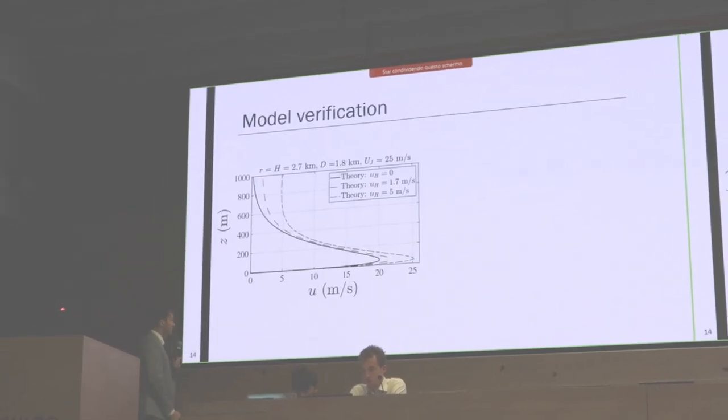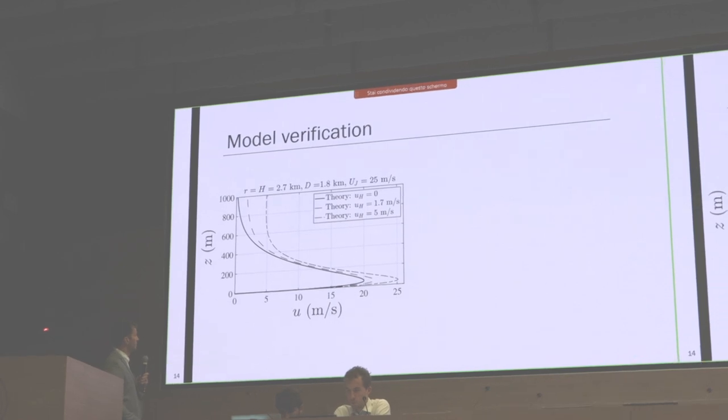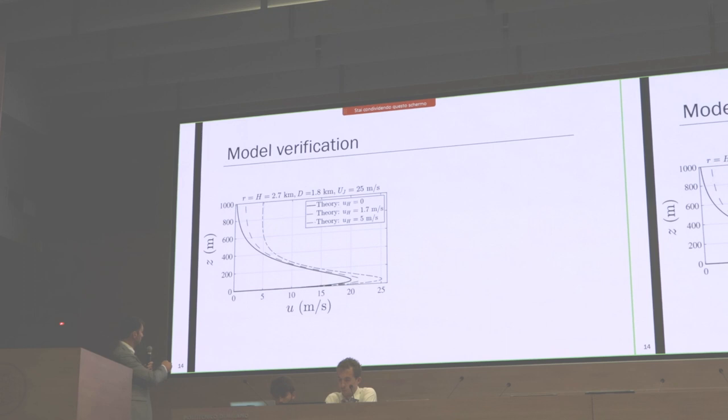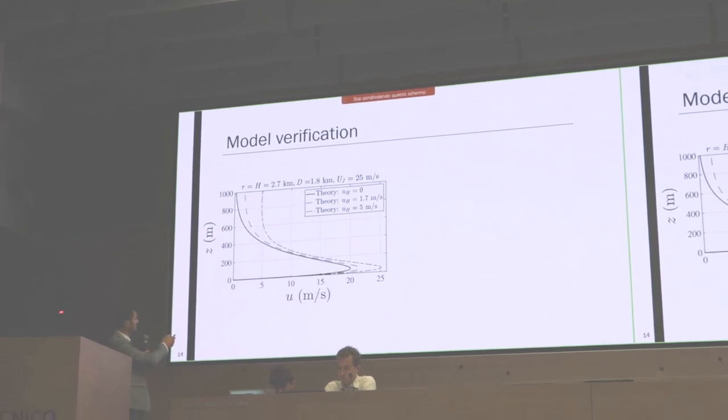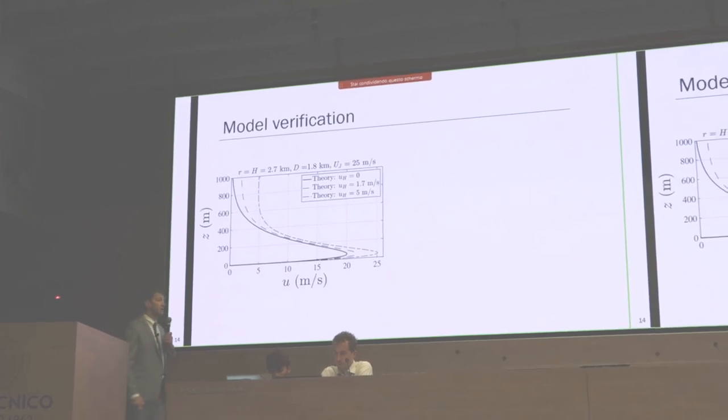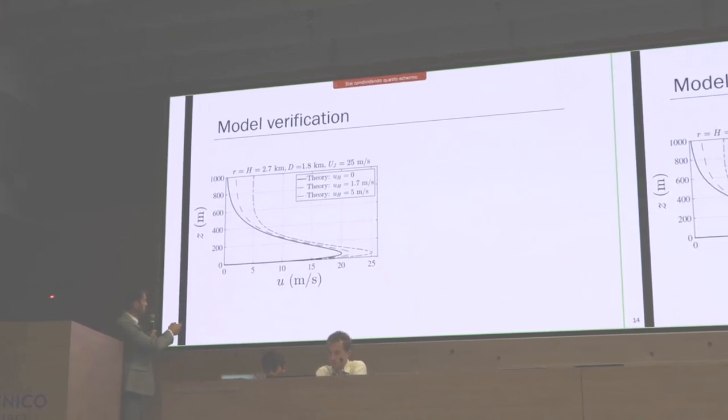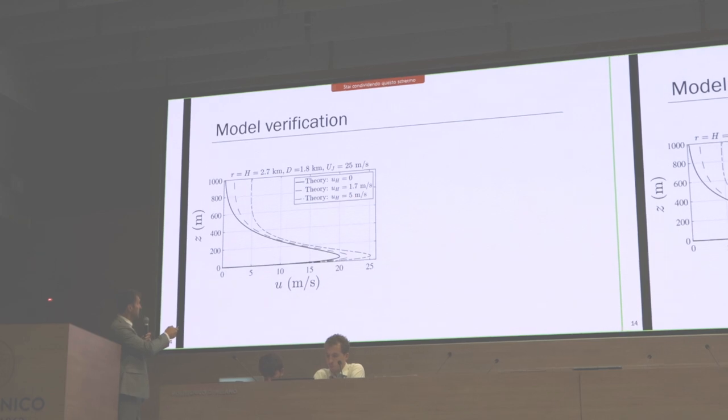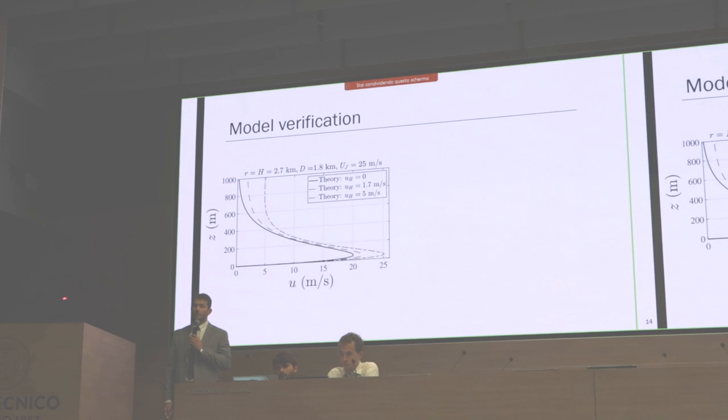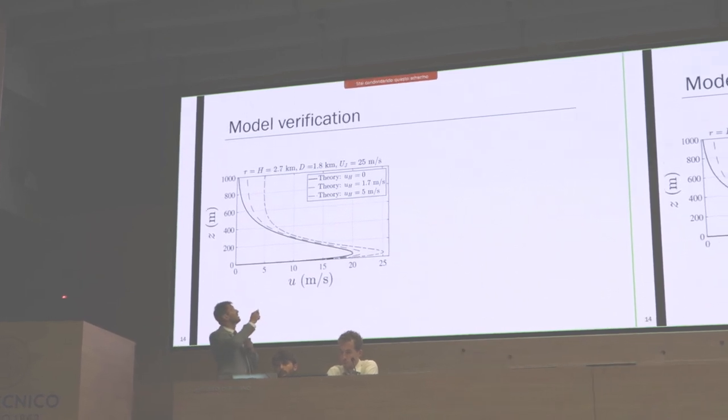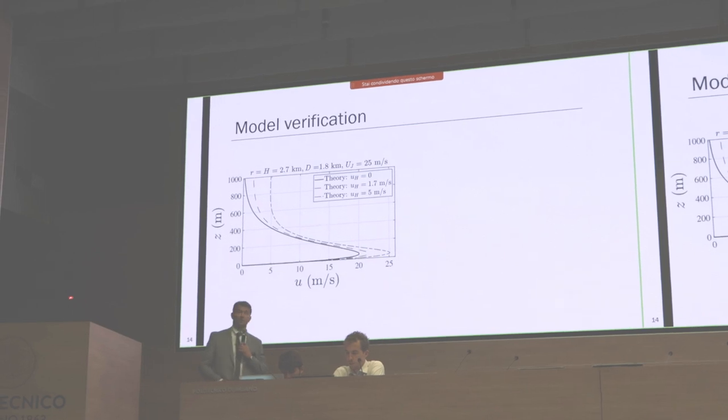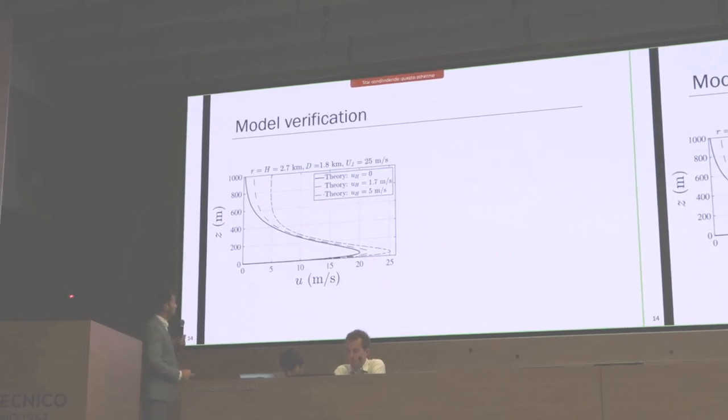Now last few slides. Here is model verification, just examples. Here without any normalization is wind speed versus height. Here is our model without ABL winds, so that would be just the basic analytical model. And here is with two ABL winds. These values we used as input parameters follow from the work of Hjemfelt 1987, which is basically the mean of real downburst he measured in the JAWS and NIMROD project.